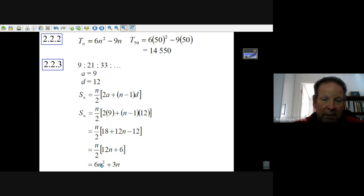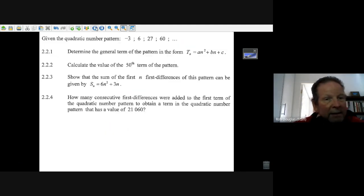There it is. It equals 6n squared and 6 times n divided by 2, 6 divided by 2 is 3n. And that's what we were supposed to show, that the sum is equal to 6n squared plus 3n. Now let's just look at this last question.